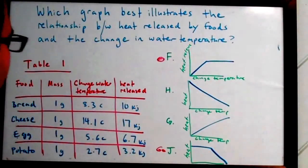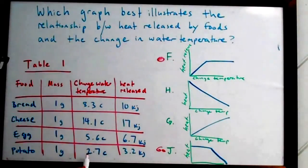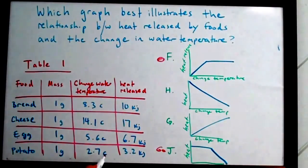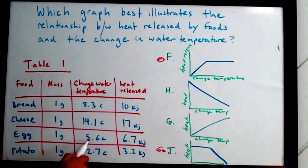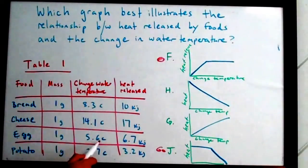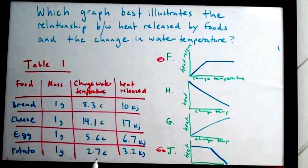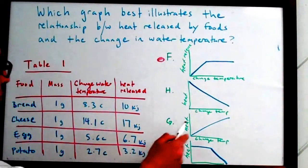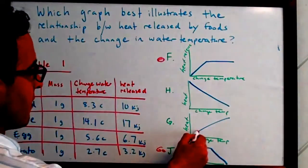This is a linear graph. Because if you start with the least amount of change of water temperature, it's the potato at 2.7 degrees Celsius. And then you work your way to the egg, 5.6 Celsius, and then to bread, and then to cheese. So if you notice, the output, the heat released for the smallest change of temperature is 3.2 kilojoules. So it's like about right here.